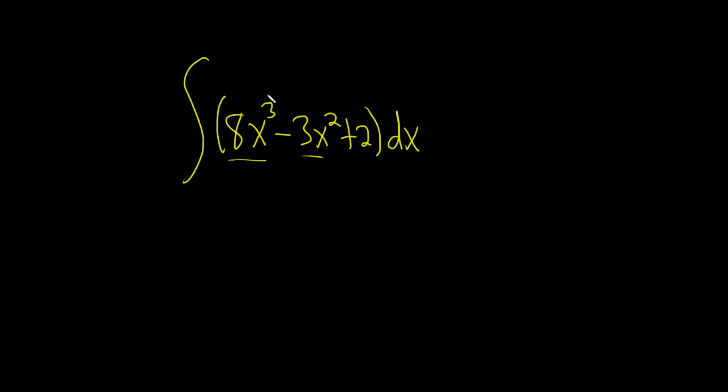The power rule says that we take this number here and add 1 to it. So it's 8x to the 4, and then we divide by the result as well.